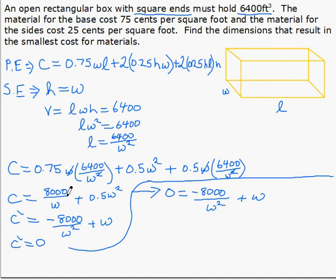Primary equation. Derivative. Make it 0. Now we solve for W. Move this piece over. Cross multiply. We get W cubed equals 8000 which tells us W is 20 and our units are feet.